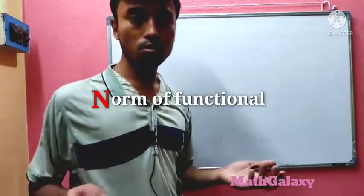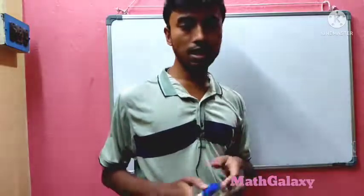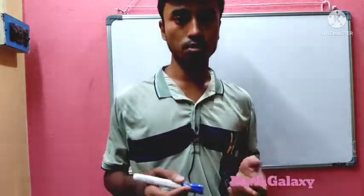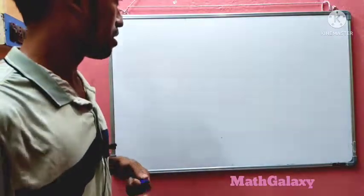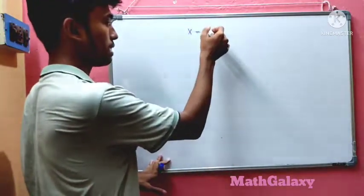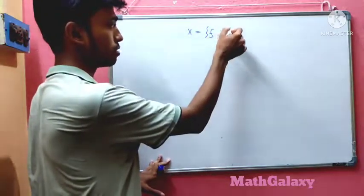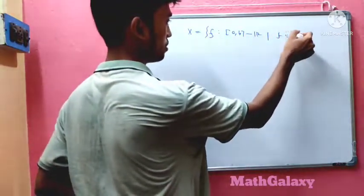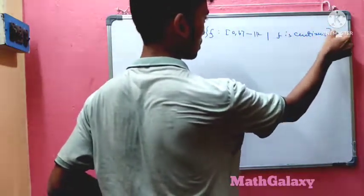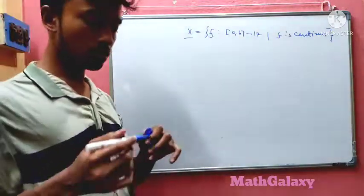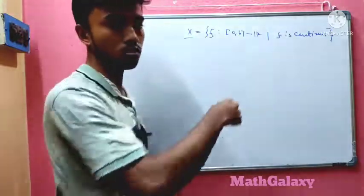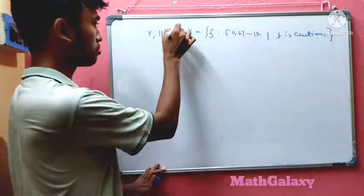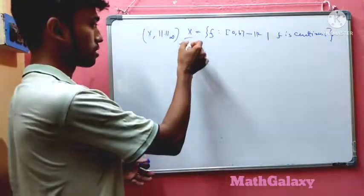Welcome to Mac Galaxy. In this video I'm going to show some techniques in functional analysis to generate the norm of a linear functional over a space of continuous functions. Consider the space X defined as all functions mapping from [a,b] to ℝ such that f is continuous. Together with the sup norm, X is a Banach space.